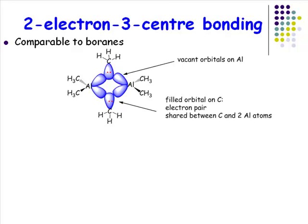Let's talk about electron-deficient bonding one last time in main group chemistry. In trimethylaluminium and certain other aluminium alkyls, we can view it as a combination of sp3 hybridised atomic orbitals on aluminium. Aluminium has four valence orbitals, giving four sp3 hybrids, but only three valence electrons since aluminium is in group 13. You can form three bonds, but having a vacant orbital is not a favourable situation.